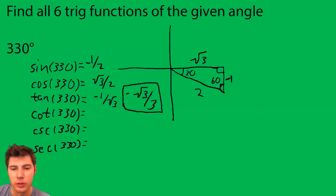Cotangent is just the reciprocal of tangent, so let's just flip this original one and it's just root 3 over negative 1, which is just negative root 3.